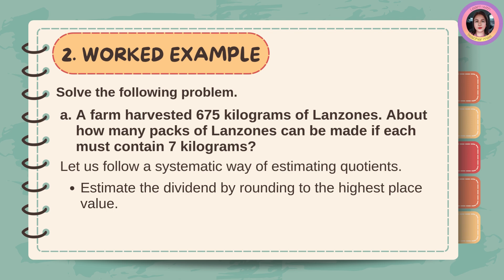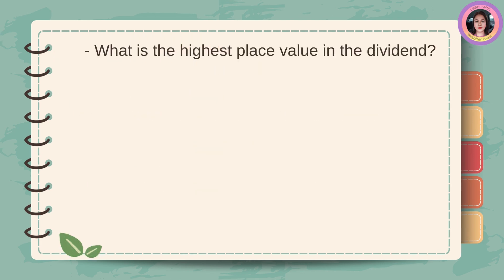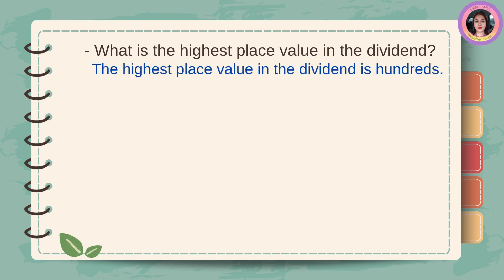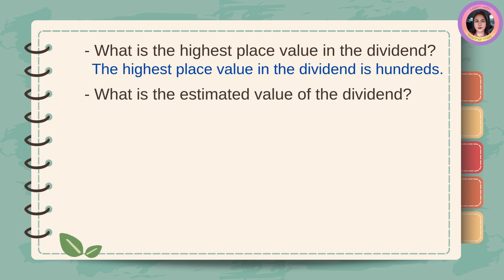Let us follow a systematic way of estimating quotients. Estimate the dividend by rounding to the highest place value. What is the highest place value in the dividend? The highest place value in the dividend is hundreds. What is the estimated value of the dividend? The estimated value of 675 is 700.